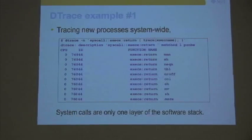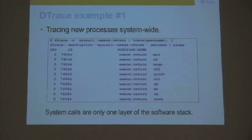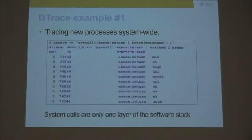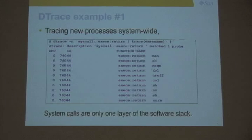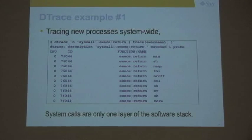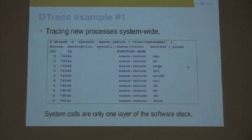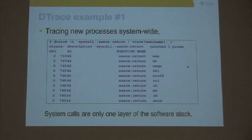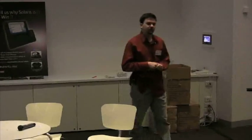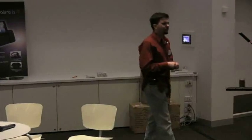DTrace example one: tracing new processes system-wide. This is a more sensible example to start with. This is a one-liner, being run on Solaris: dtrace -n syscall::exec_e:return — trace execname. What it's doing is showing you whatever processes are executed live and printing that out. That was something that was very difficult to do before. How did you find out what process names were being executed live?